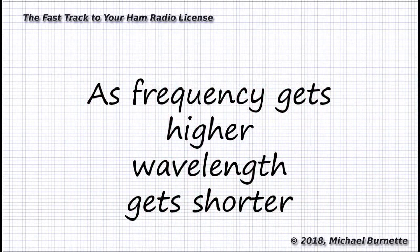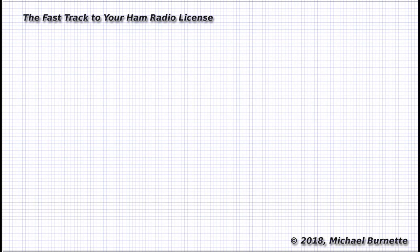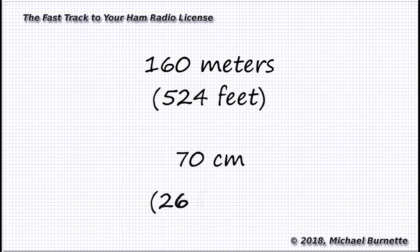The most used ham radio frequencies range in wavelength from 160 meters, a football field and another two-thirds of a football field, to those 70-centimeter signals that have a wavelength of about 26 inches.